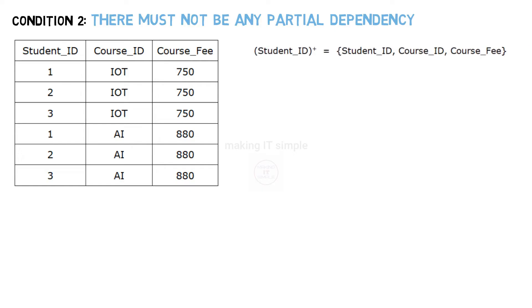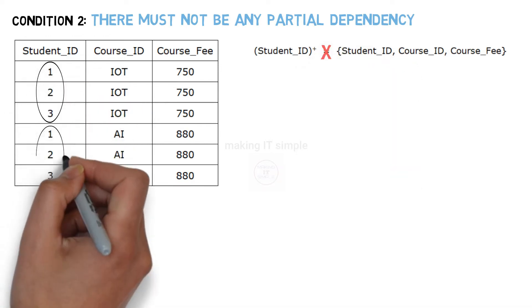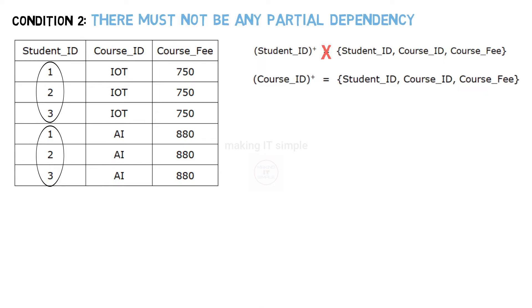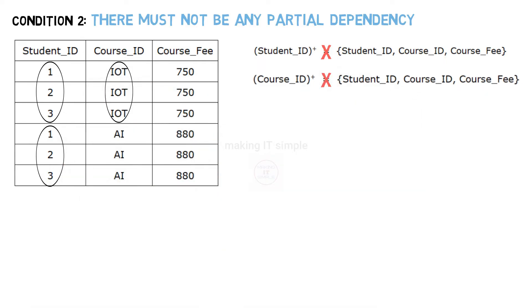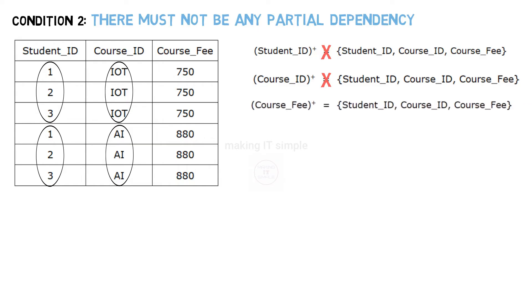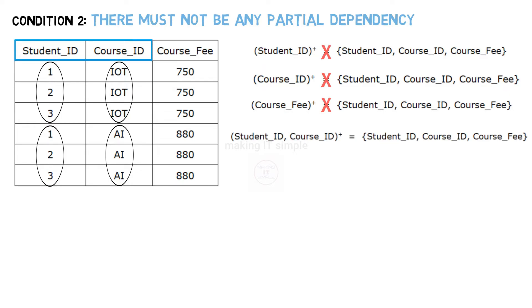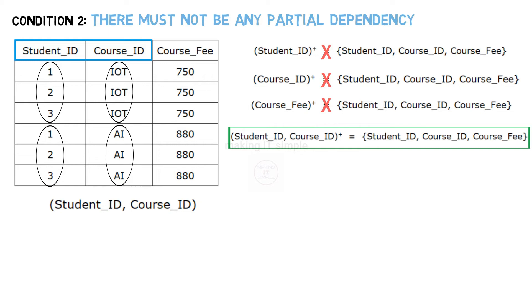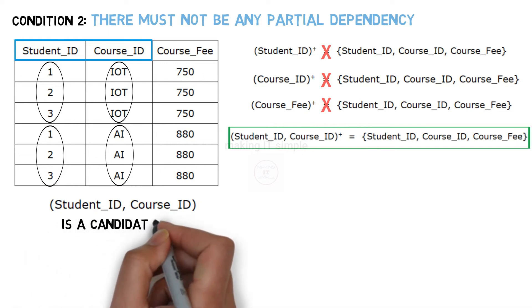In this table, just by using student id can we identify the complete tuple? No, there is redundancy present in it. Similarly using course id we cannot identify complete tuple. It also has redundancies. Same is the condition with course fee. So if you look up closely, by using student id and course id we can identify the complete tuple. That is student id and course id closure will give us values of all attributes. So we can conclude that student id and course id together form a candidate key. There is only one candidate key in this table.